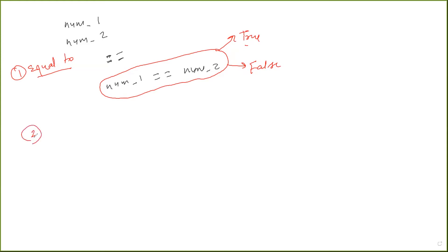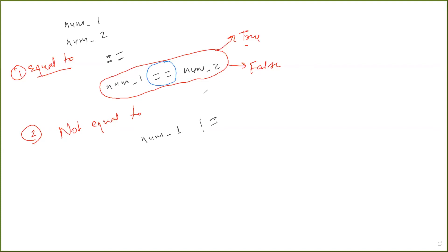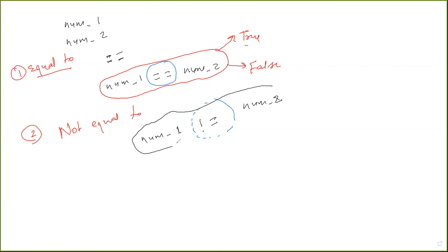Let's look at another comparison operator: not equal to. This comparison operator again takes two numbers and returns true or false based on whether these two numbers are equal or not. The symbol for not equal to is !=. When we write num one != num two, it returns true if num one is not equal to num two, and false if they are equal. We'll look at it programmatically in a minute.